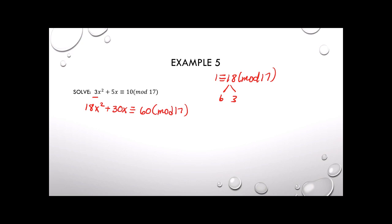18x squared reduces to x squared, and 30x reduces to 13x. But we want the x coefficient to be even to complete the square, so we'll leave it as 30x for now. And 60 reduced mod 17 gives 9, since 17 goes into 51.